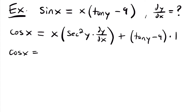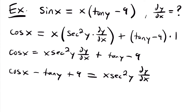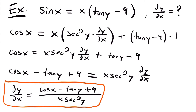Simplifying, cos x equals x secant squared y dy/dx plus tangent y minus 9. We move all non-dy/dx terms to the left: cos x minus tangent y plus 9 equals x secant squared y dy/dx. Our final step is to divide both sides by x secant squared y to isolate dy/dx. So dy/dx equals (cos x minus tangent y plus 9) divided by x secant squared y. That is the derivative of our implicitly defined function.